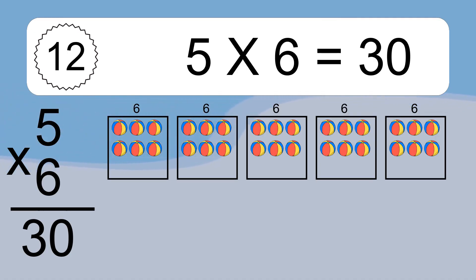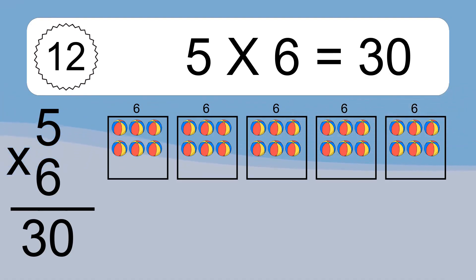We have 10 boxes, and each box has 6 colorful balls inside. If you count all the balls in all the boxes together, you will have 5 times 6 balls. This equals 30 balls.